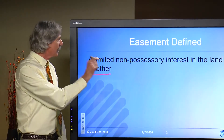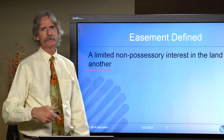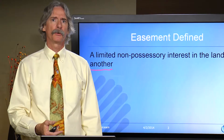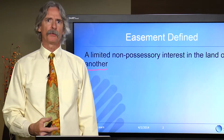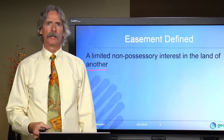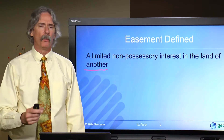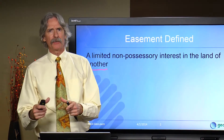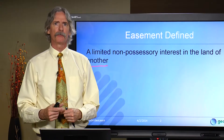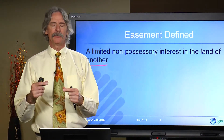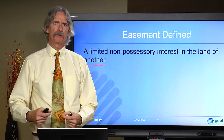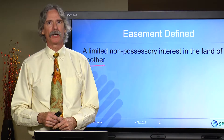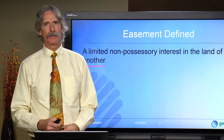So: a limited non-possessory interest in the land of another. As we go on in this series of tutorials, we're going to have a lot of citations of court cases from around the country in different states. There are two or three reasons I want to do this. One is that a lot of times I'm looking at a case and it's defining something in particular, and I just really like the way that particular court made that statement or defined that particular item, so I'll throw that in.